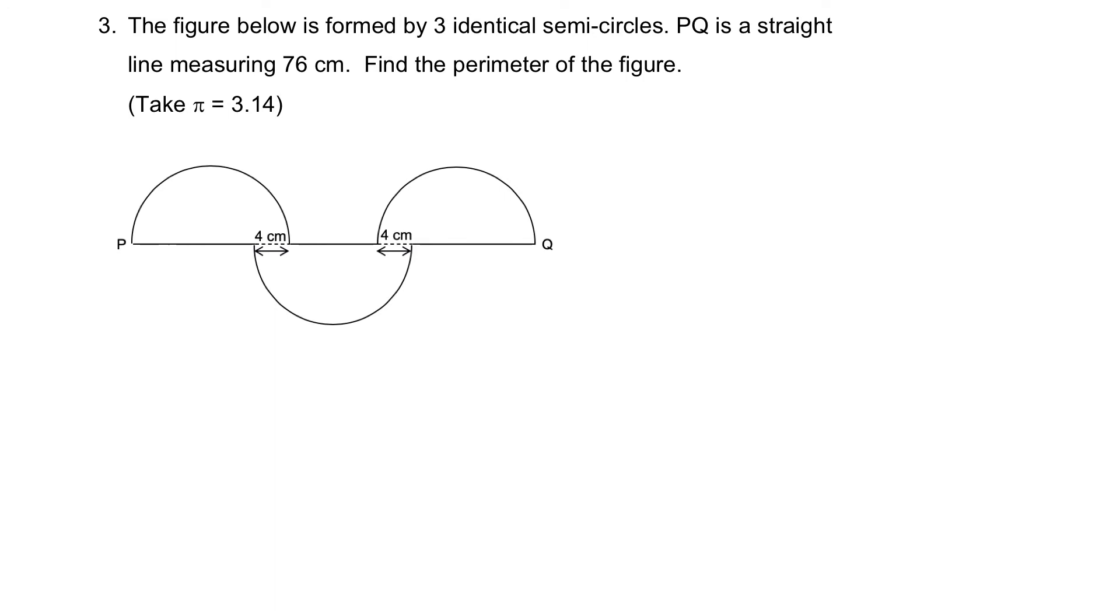This question looks somewhat similar to last year's PSLE question, probably in a simpler form. The figure below is formed by 3 identical semicircles. PQ is a straight line measuring 76 cm. So, from here, P cutting through the entire thing to Q, this is 76 cm. Find the perimeter of the figure. Which means what they want to find is this, this, this, this. Three circumferences of a semicircle plus this, and this, and this. So this is the perimeter which they are trying to find. Now, you think about it. If this entire thing is 76 cm, can we maybe manipulate this line such that we can divide it up into equal parts?